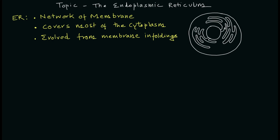The smooth endoplasmic reticulum is slightly different than the rough endoplasmic reticulum. When you see the structure it looks like this — this is the schematic of the endoplasmic reticulum, although the flat sacs are the representation of the rough endoplasmic reticulum.